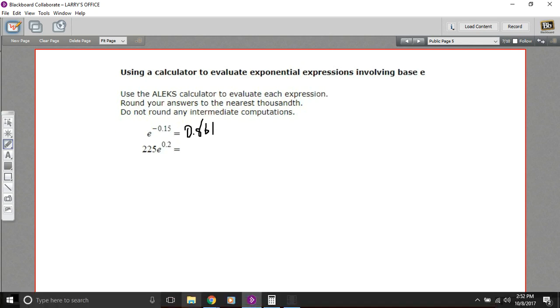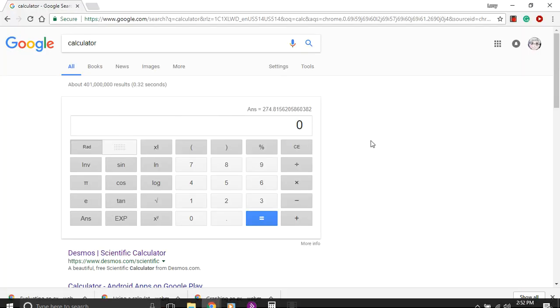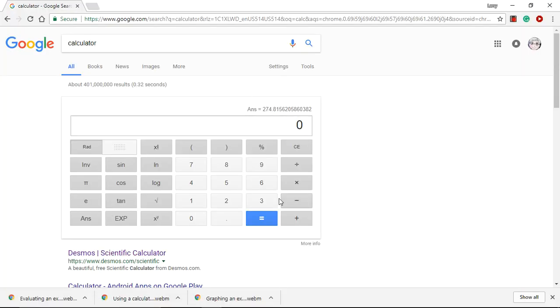Let's double check that on a different calculator. The Google calculator works a little bit differently. So if you're using this one, it's good to know how it works. In this case, we can just press e and the x to the y key and take that to any power we want. We want a negative 0.15.